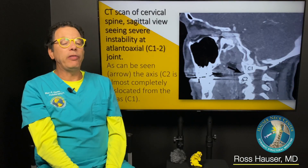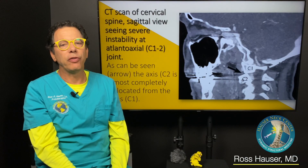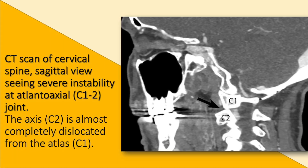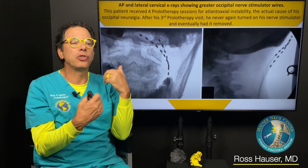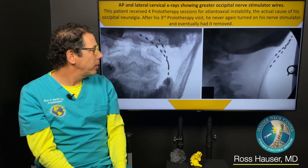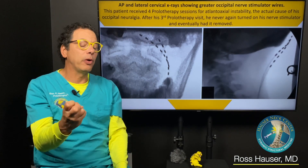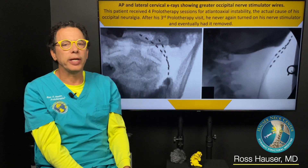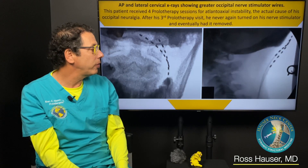There are many ways to find whether or not there's a C1, C2 problem. CT scans can sometimes show it. Upright MRIs with flexion-extension views are another option. The simplest way is just to do a digital motion scan, which shows the extra motion. And then once that motion is decreased by prolotherapy — by tightening the ligaments — there's less compression and stretch on the C2 nerve and the occipital nerve.